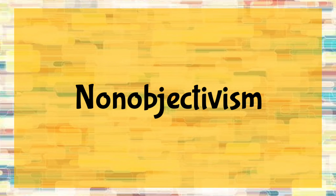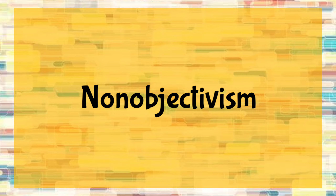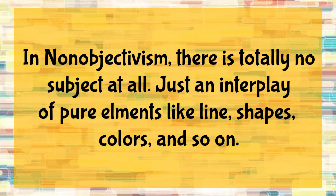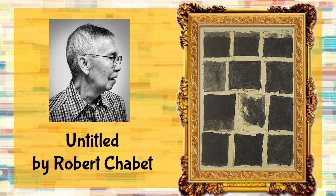The fourth and last is non-objectivism. In non-objectivism, there is totally no subject at all, just an interplay of pure elements like line, shapes, colors, and so on. An example of this is this untitled painting by Robert Chabet.